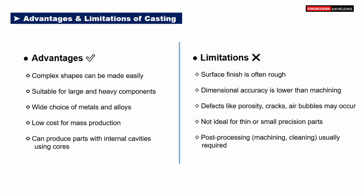Casting is a widely used manufacturing process that offers several benefits, but it also has a few limitations. Advantages of casting: complex shapes can be made easily, even intricate geometries that are difficult to machine. It is suitable for large and heavy components, such as engine blocks and industrial equipment parts. There's a wide choice of metals and alloys, making casting highly versatile. The process is cost-effective for mass production, especially when producing large quantities. Internal cavities and hollow sections can also be created using cores inside the mold.